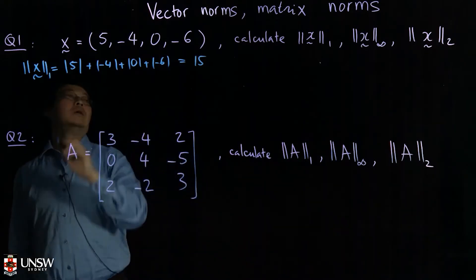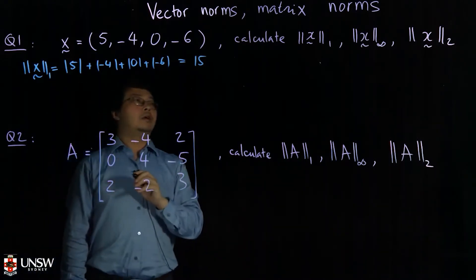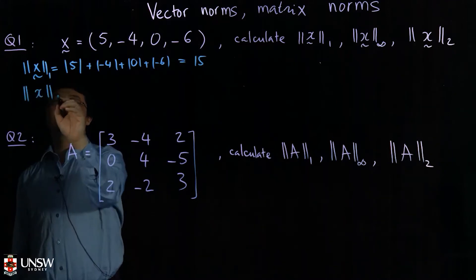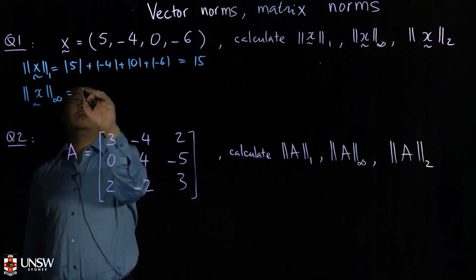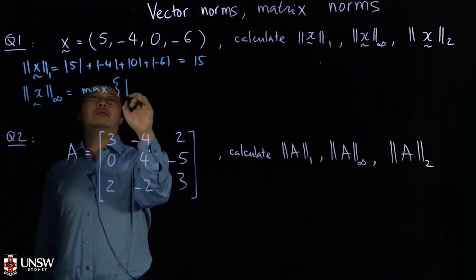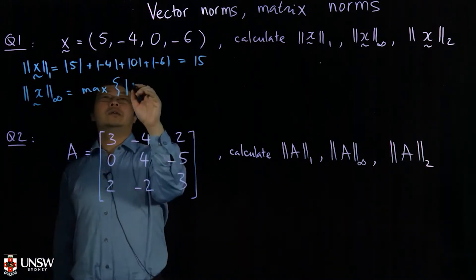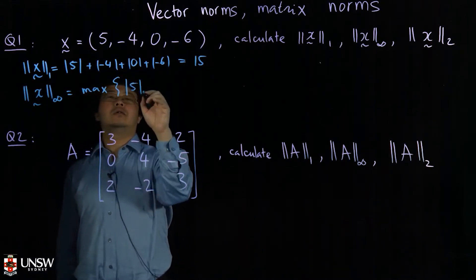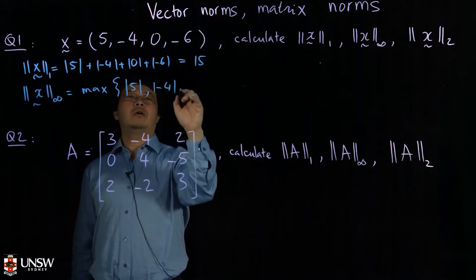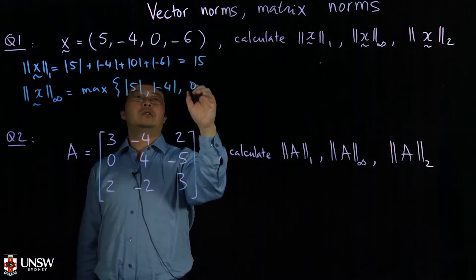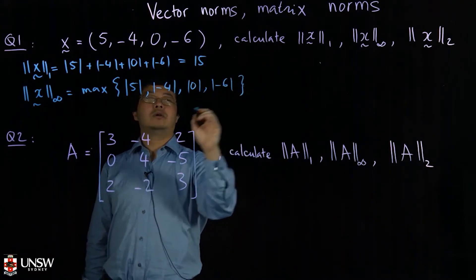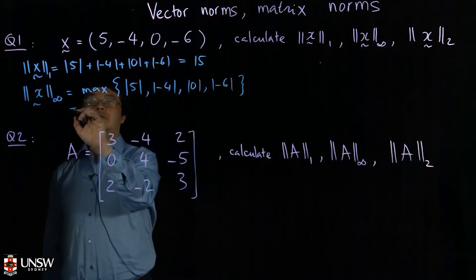The infinity norm of the vector x is defined to be the max of the absolute value of all the entries. So max of |5|, |-4|, |0|, |-6|, and it gives you 6.